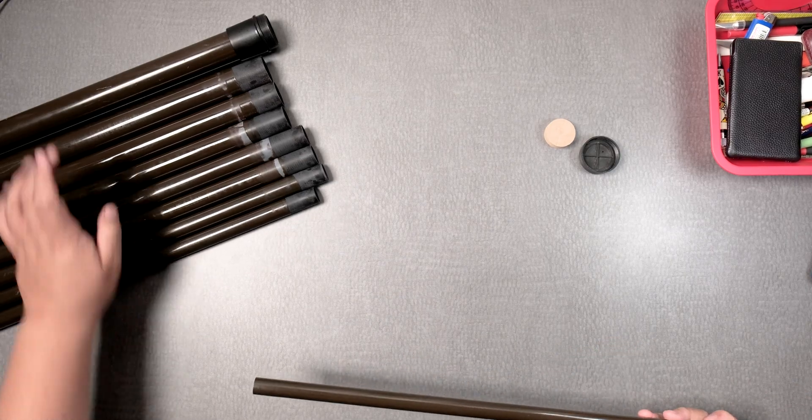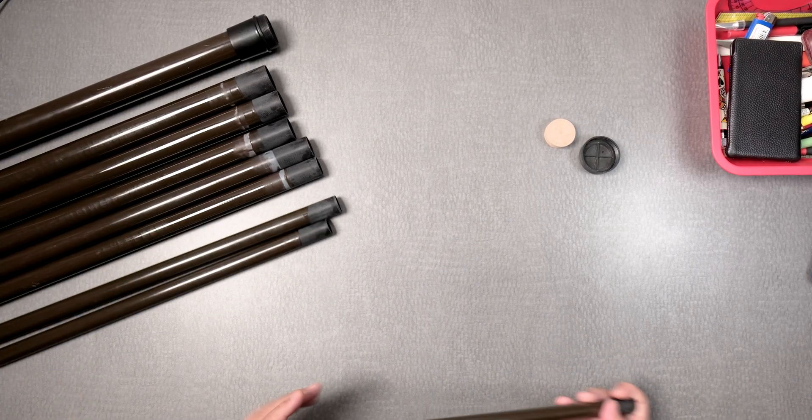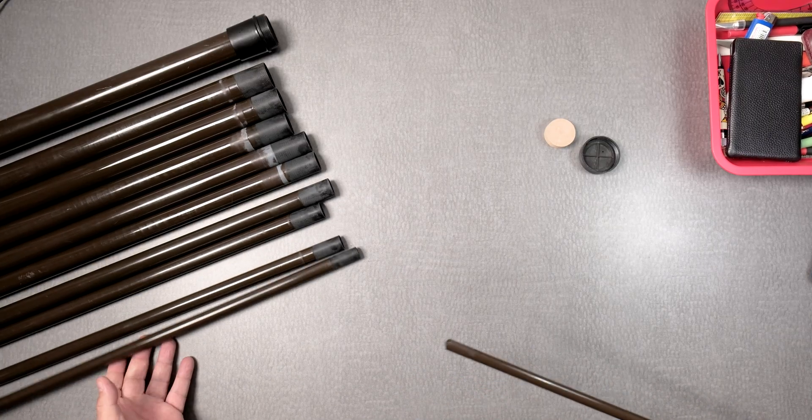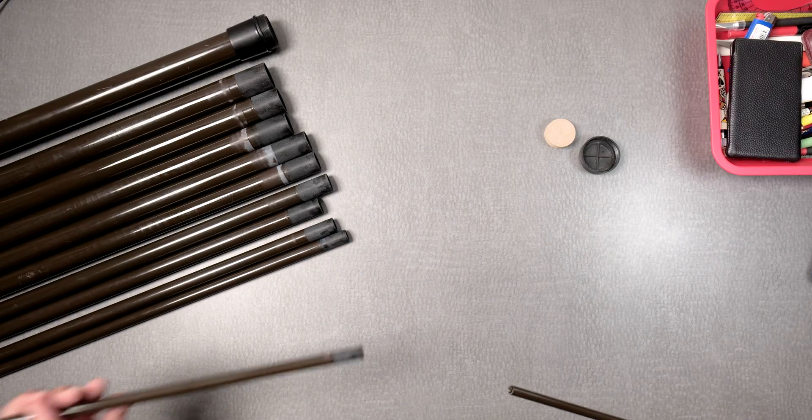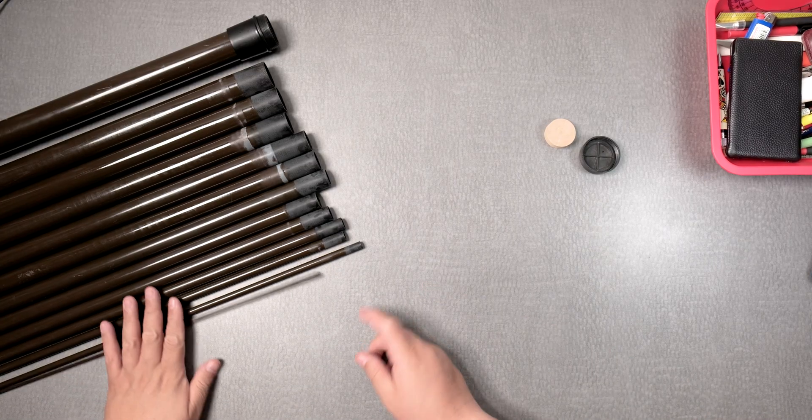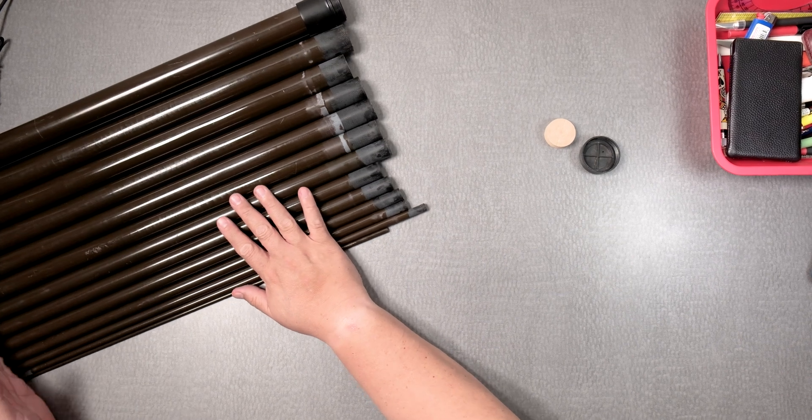As you can see it has many tubes. The next one and the next one. One, two, three, four, five, six, seven, eight, nine, ten, eleven, twelve, and thirteen. So you have thirteen tubes.